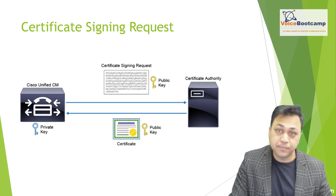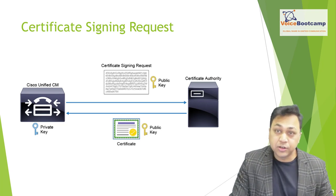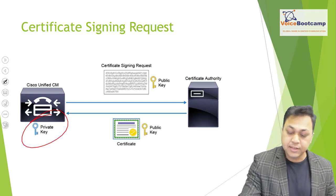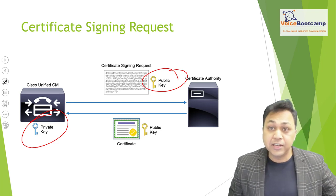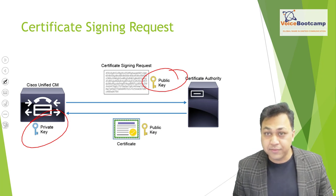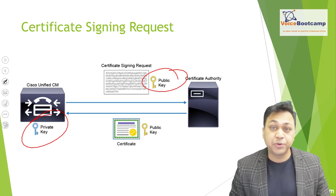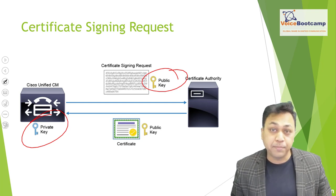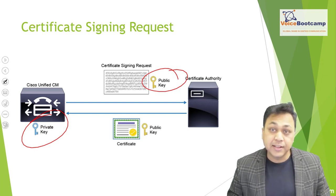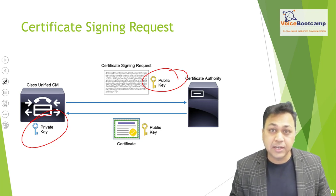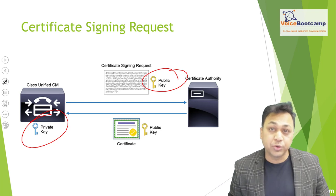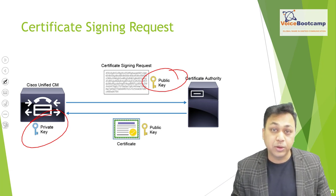Asymmetric encryption uses two keys: a private key and a public key. Anything encrypted with the public key can only be decrypted with the corresponding private key, and vice versa. The private key is held securely on the server. Anything encrypted with the private key can only be decrypted with the corresponding public key.